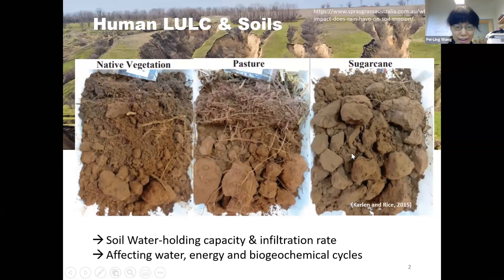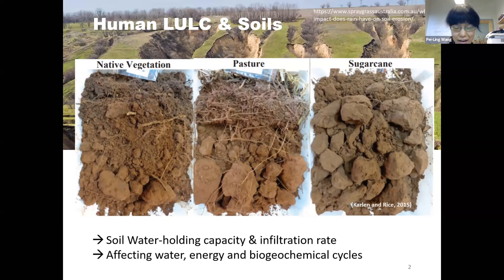We know human activities depend a lot on soil, and we also constantly change soils all the time. That affects soil water holding capacity and infiltration rate, and as a result it affects water, energy, and biogeochemical cycles. We know this from a lot of small-scale studies. However, in most of the earth system models, despite the land use and land cover changes in history, the soil properties in those models often stay constant, and that affects model projections and impact assessments.